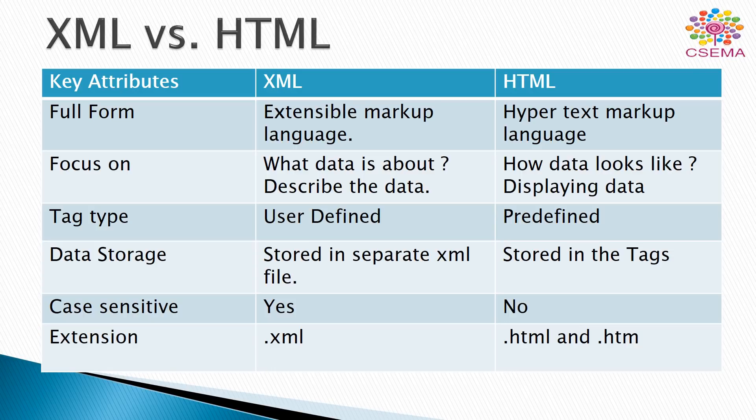XML is case sensitive while HTML is not a case-sensitive markup language. The extension name of an XML file is .xml and the extension file name of an HTML file is .html or .htm.